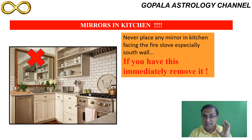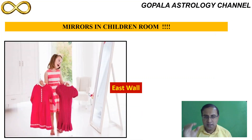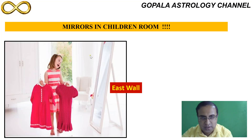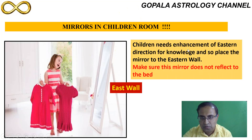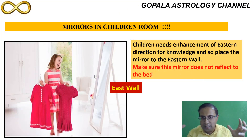Let's go to the children's room. Children are always seekers of knowledge — they go to school and want to learn things every day. What you need to do is enhance the wall in the eastern direction. Please make sure that the eastern direction wall mirror does not reflect the bed where your kid is sleeping. Avoid that, and you are perfectly okay to keep the mirror in the eastern direction.